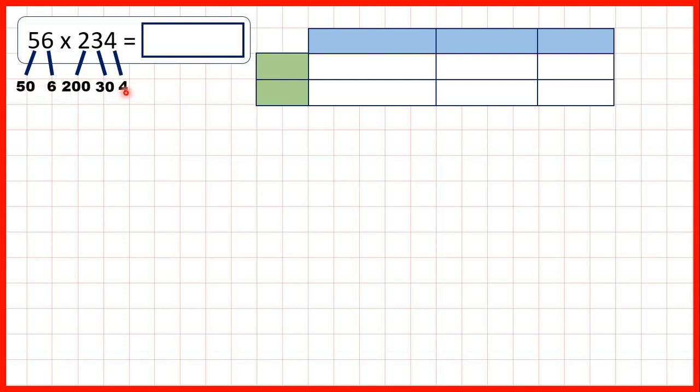So now we can write these partitioned numbers down the side and top of our grid. We have 50 and 6, and 200, 30, and 4.